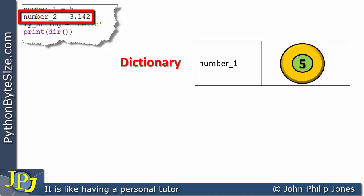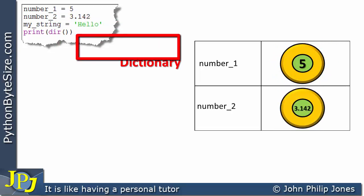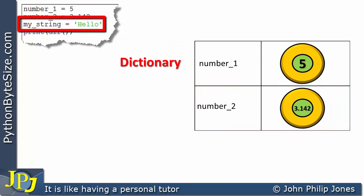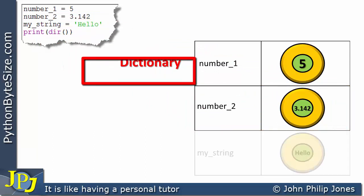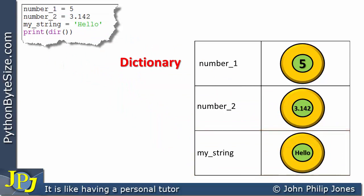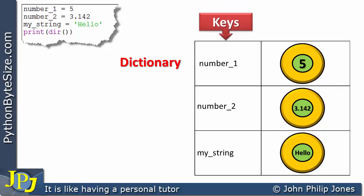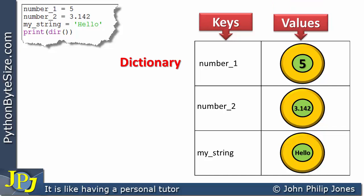If we look at this program statement, it will generate an entry in the dictionary as shown, and this program statement will also enter into the dictionary as shown. If we consider the dictionary, this column is the keys and this holds the values. This key here is referencing this instance that has this value.